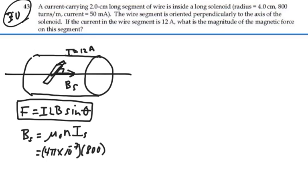And the current of the solenoid is 50 milliamps. So that's going to be 0.05 amps. So if we calculate this,